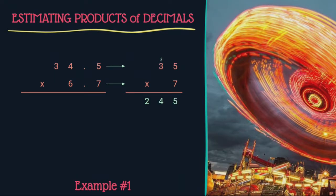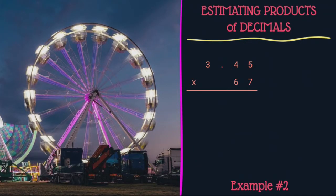Example 2: I have the same digits but I have changed up the decimals. Let's see how this changes the problem. We're still going to round both numbers to the nearest whole number. So 3.45 hundredths will round to 3, and 67 is already a whole number, so we're just going to leave it.